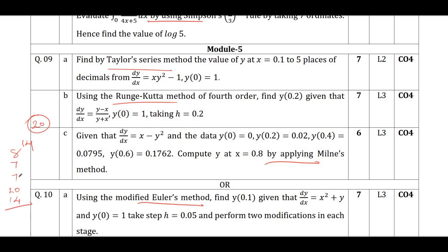Now if you count the total: from Module 1 minimum 8 marks, from Module 2 seven marks, from Module 3 seven marks, from Module 4 twenty marks, and from Module 5 taking the minimum of 14 marks. Adding these up gives you 46 marks — but you only need 35 marks to pass. So studying this way, you can comfortably score 46 marks, which is very good.